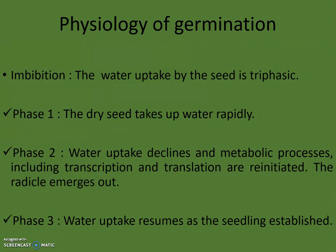When seeds are placed on a moist substrate, germination begins. The first step in germination is imbibition — that is, the water uptake by the seed. This water uptake is triphasic, divided into three phases: Phase 1, Phase 2, and Phase 3. In Phase 1, dry seeds take up water rapidly. In Phase 2, water uptake declines and metabolic processes including transcription and translation are re-initiated, and the radicle emerges. By the end of Phase 1 and Phase 2 the actual germination is completed. In Phase 3, water uptake resumes as the seedling is established — this is the post-germination phase where water is utilized for seedling establishment.